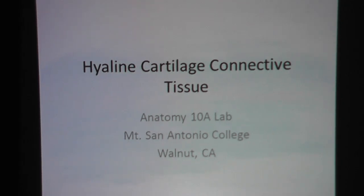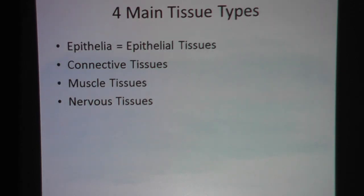Hyaline cartilage connective tissue. This is made for Anatomy 10A lab at Mount San Antonio College. Remember we have four main tissue types in the body: epithelial tissues, connective tissues, and nervous tissue. Right now we're going to talk about cartilage, so we're going to zoom in on connective tissues.